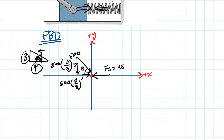We also have the weight of the block — mass times gravity — and the normal force from the contact surface. We will not sum forces in the y-direction because without a given coefficient of friction, we don't need the normal force. Since the surface is smooth, friction is zero. So we will sum forces in the x-direction only.